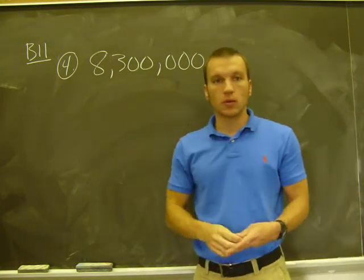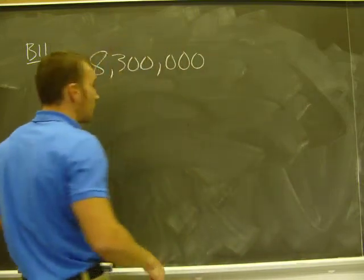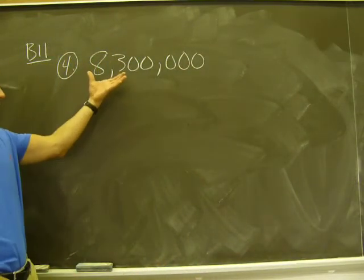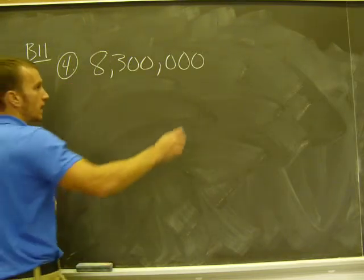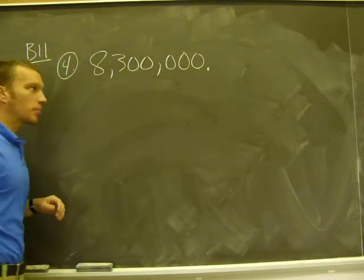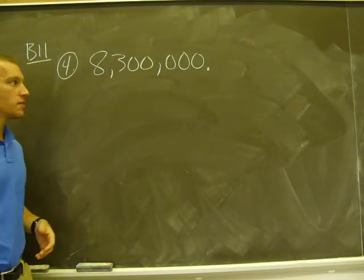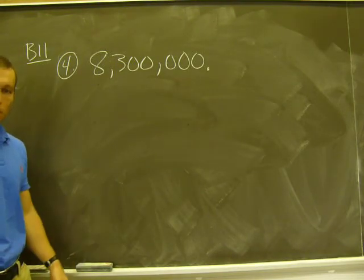The number between 1 and 10 I get by looking at the 8,300,000 and figuring out how do I write a number there between 1 and 10. Well, here's my decimal place there, so I'm going to move my decimal place until I have a number between 1 and 10.